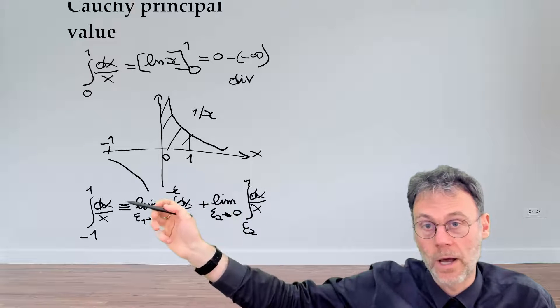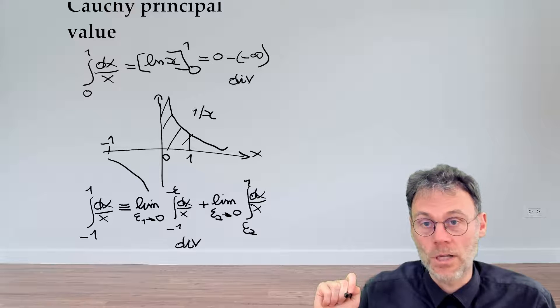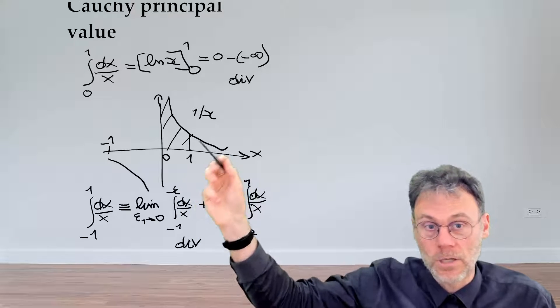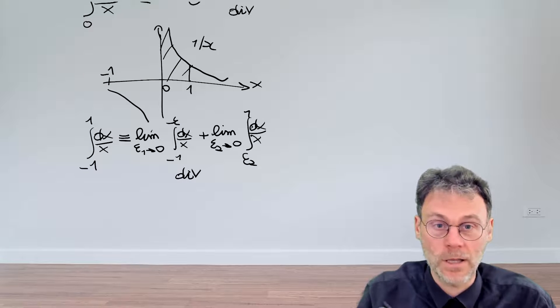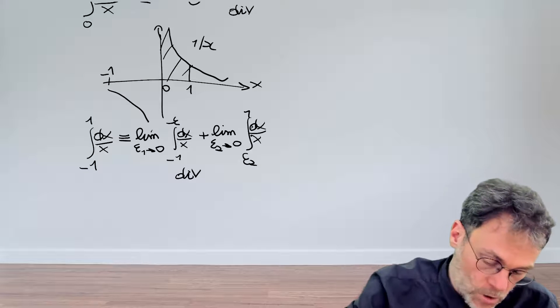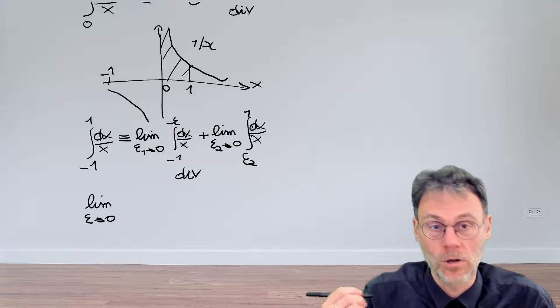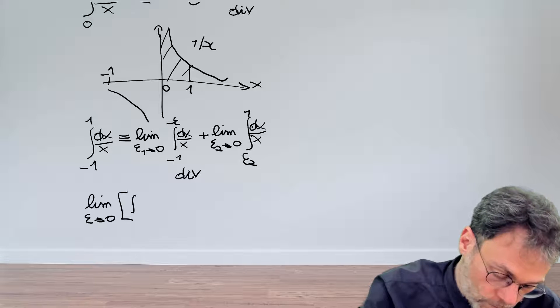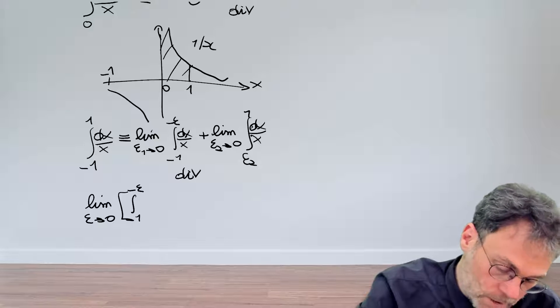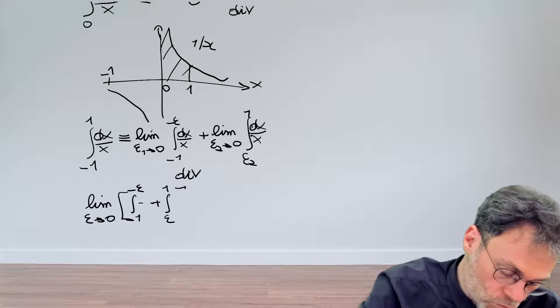And again, that's just by definition. Now, how do we express the concept that there is some symmetry going on? That if you look at a different limiting operation where you only have the limit of a single value epsilon going towards 0 of the integral from minus 1 to minus epsilon and then the integral from epsilon to 1.